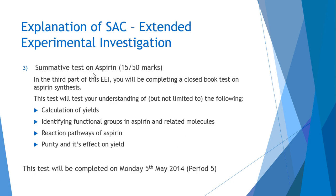The third part of the SAC is a summative test on aspirin synthesis. You'll be getting a multiple choice and short answer test worth 15 marks out of the total 50. The topics covered include, but are not limited to: calculation of yields, identifying functional groups in aspirin and related molecules, reaction pathways of aspirin, purity and its effects on yield. This test will be completed in the third week of school on Monday the 5th of May during period 5.